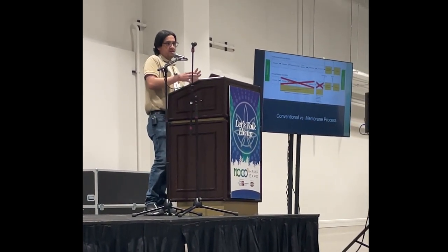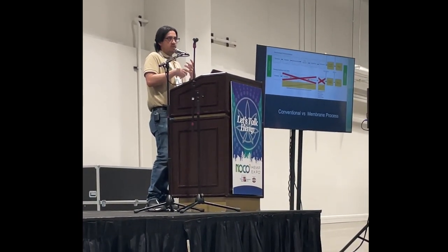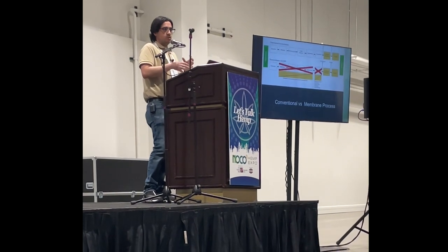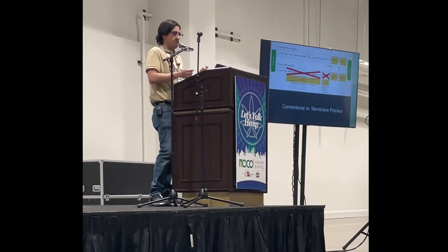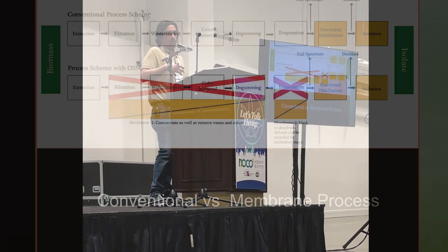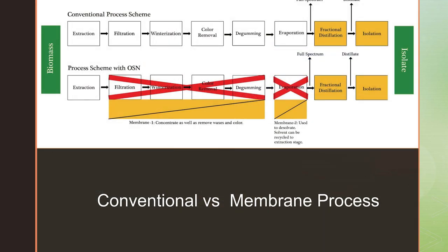The cool thing about this process is that it eliminates so much equipment and so many steps in the traditional process from starting material all the way down to isolate. That drastically reduces your capital expenditure of setting up a lab and the operating expense, because there are fewer consumables, less energy, less equipment, and less labor — it really changes the dynamics of what a laboratory looks like and what it costs to make and operate one.